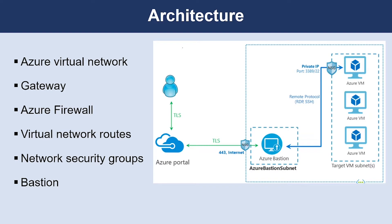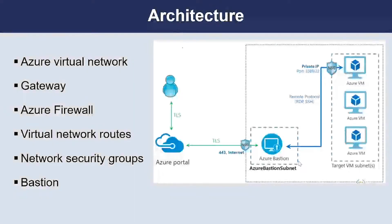Then we have Azure Firewall, which is a managed firewall as a service. The firewall instance is placed in its own subnet. Then we have Bastion. Azure Bastion allows you to log into VMs in the virtual network through SSH or Remote Desktop Protocol without exposing the VMs directly to the internet. You can use Bastion to manage the VMs in the virtual network.